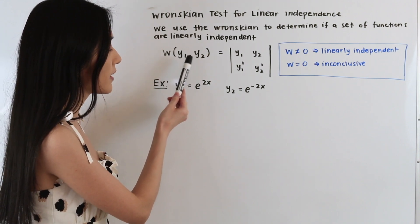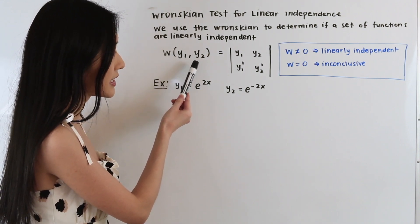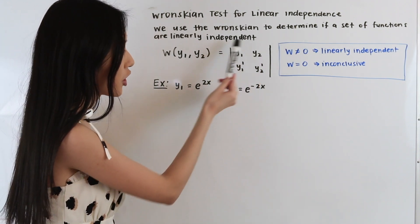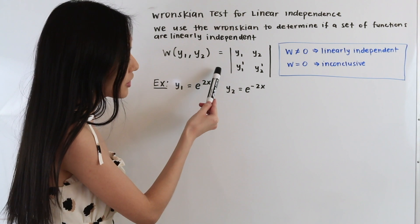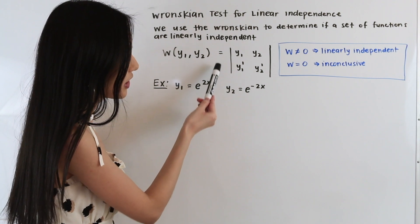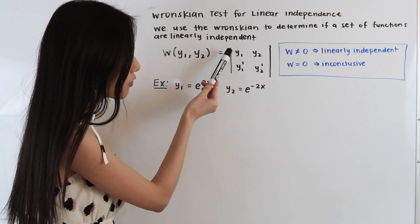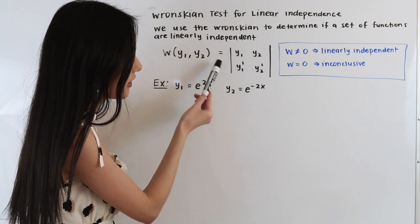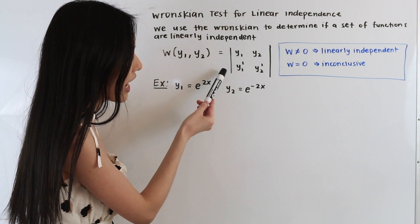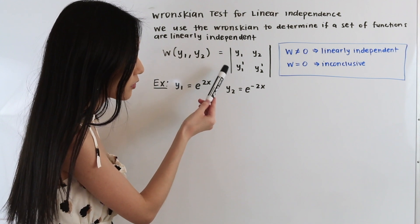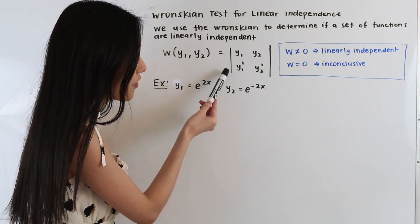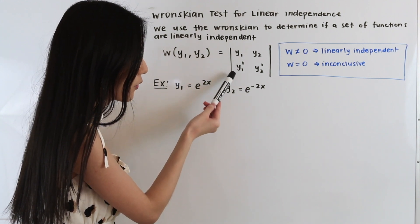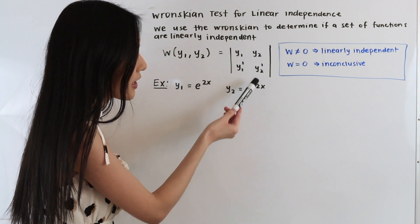The Wronskian of y1 and y2 is equal to the determinant of the following matrix. In the first row we have y1 and y2, our two functions, and in the second row we have the corresponding derivatives of the functions from the first row — so we have y1 prime and y2 prime.